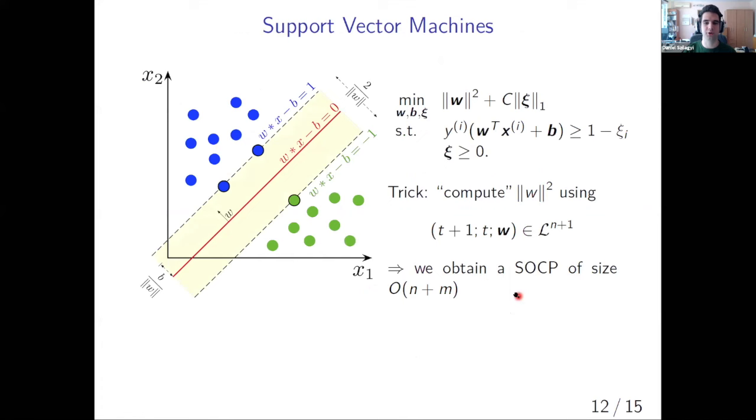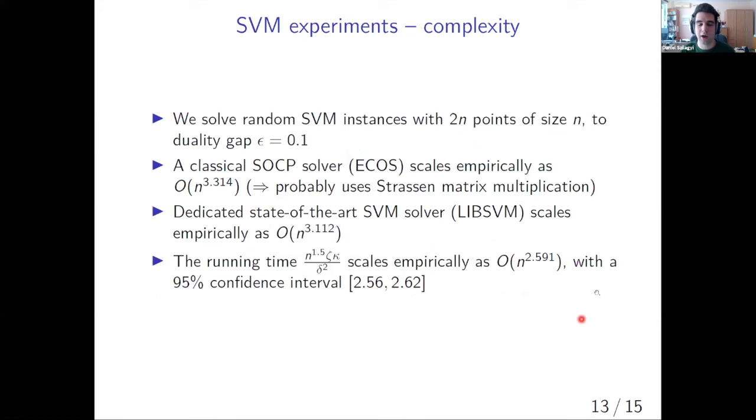So in short, what are support vector machines? The setup is that you have a bunch of points that are labeled, for example, with blue and green, and you want to find a hyperplane separating these two labels such that the margin, this distance here is maximized. The corresponding optimization problem is here. You see that it doesn't look very exciting. The only non-trivial part here is that we have this quadratic term in the norm of W. To embed this problem as an SOCP, we use this simple trick of constraining this vector to be in the Lorentz cone, and we obtain an SOCP of a size that is linear in the size of our SVM.